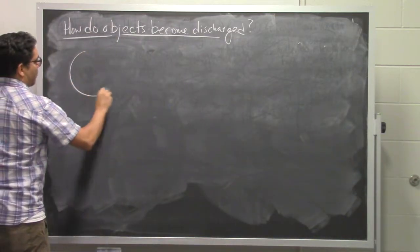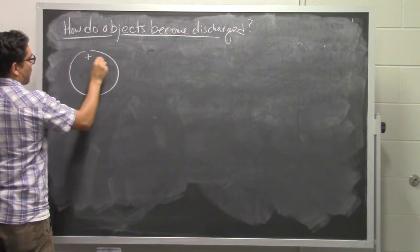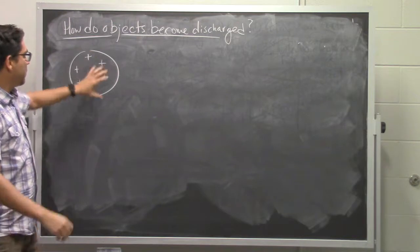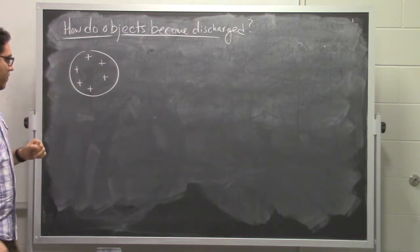So what we'll do is we'll start with an object that has some positive charge. And in this case, we'll make it a metal for simplicity's sake. So we have all of this charge sort of sitting on the outside, far away from everything.